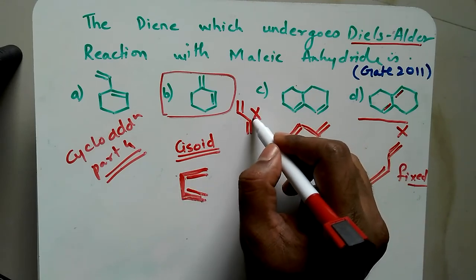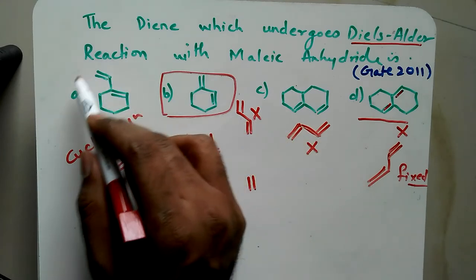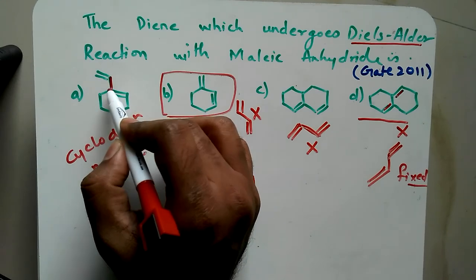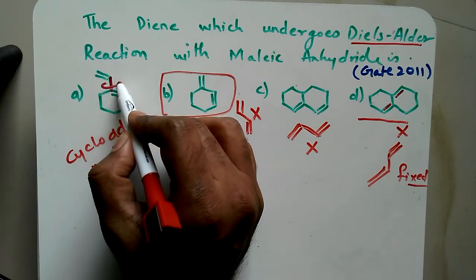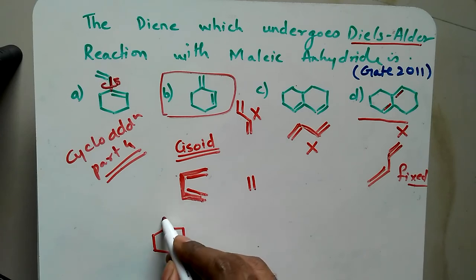Now what about option A? If you are observing, there is a single bond here. If you know, rotation at the single bond is possible, and once it rotates, option A can be drawn in this way. After rotating this single bond, the double bond comes in the cisoid condition.